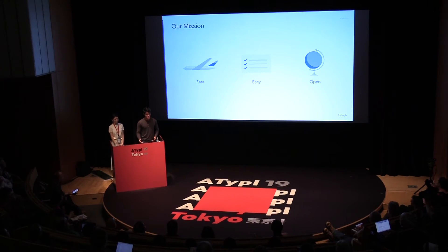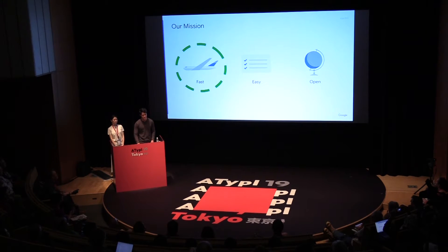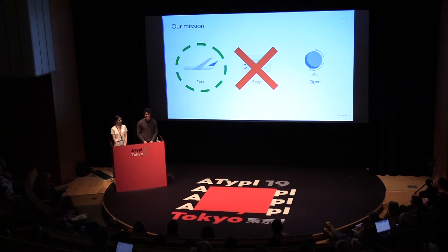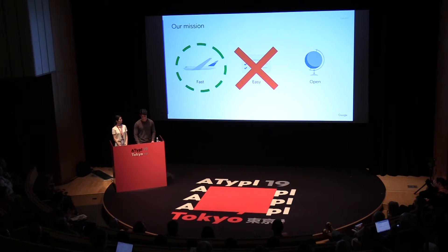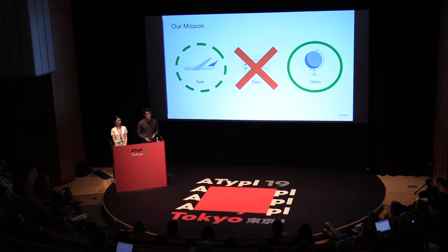For some context, Google Fonts aims to make typography fast, easy, and open. There's a strong argument that variable fonts can make things faster, but there's some nuance there that we'll dive deeper into later. VF has proven quite challenging in terms of being easy. VF redeems itself, however, in making type more open, and for our engineering team it offers opportunities to invest further in open source tooling like font tools and HarfBuzz, to the benefit of the font industry at large.